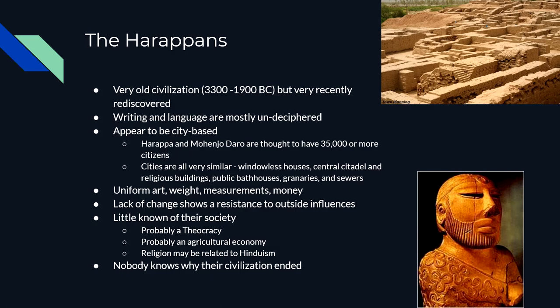The cities that we have uncovered all look pretty similar. They all have houses that are small, square, and windowless. There is a central citadel or courtyard in town. There are religious buildings that all look similar, which means they probably had the same or a similar religion. All these cities have public bathhouses, granaries where their food was stored, and sewers. These people had running water and a sewer system as well.